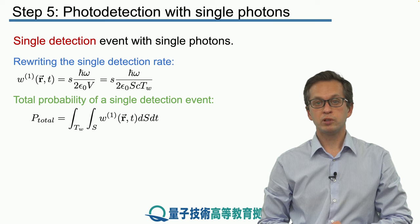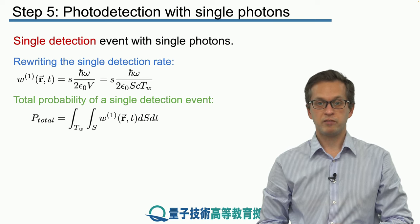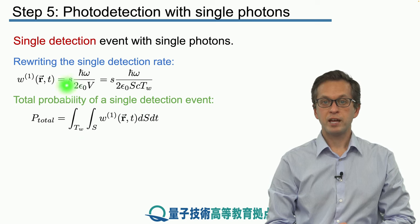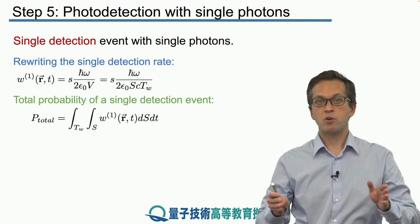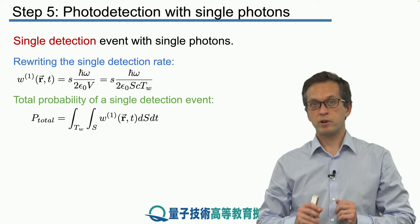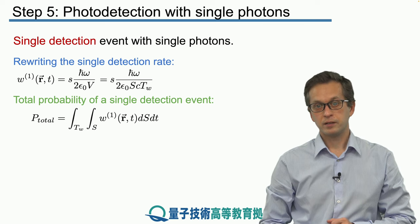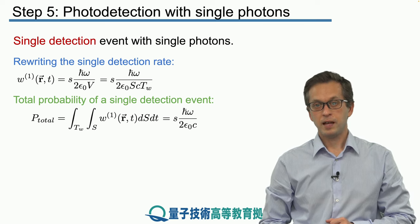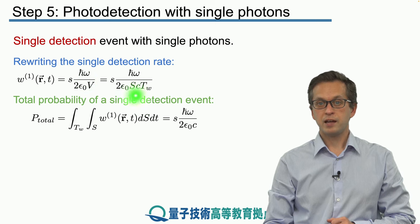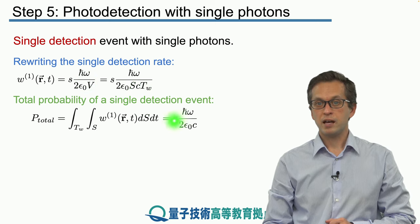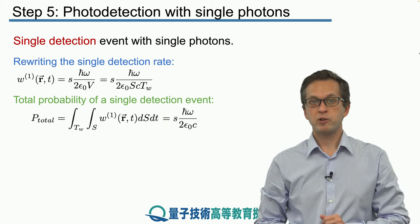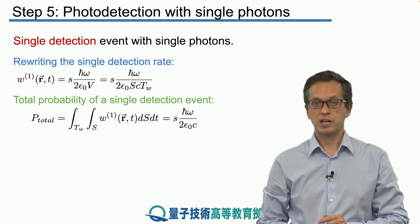Now we are ready to compute the total probability of a single detection event. All we have to do is integrate for long enough time, long enough time that covers the whole duration of our single photon wave packet. And we integrate over the whole width of the beam. And we get the following. All that we do is we cancel this s here and this tw here. So the total probability of a single detection event is given by s times ℏω divided by 2 times ε0 times c.